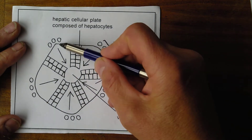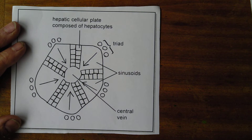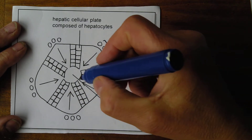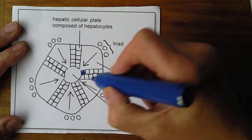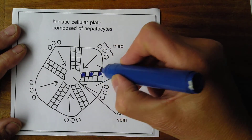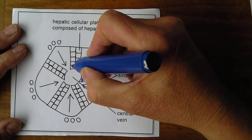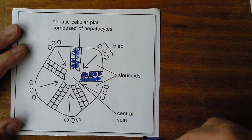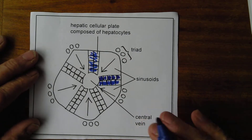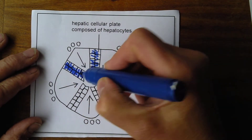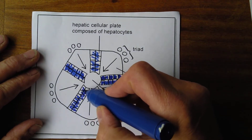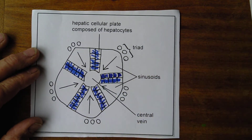Looking at a single hepatic lobule, we see it's made up of hepatic plates. The hepatic plates are made with individual hepatocytes — there's a hepatocyte, there's a hepatocyte — and in between, all hepatocytes. These are double rows of hepatocytes, and that makes up a hepatic cellular plate. In the middle we also have a central vein.